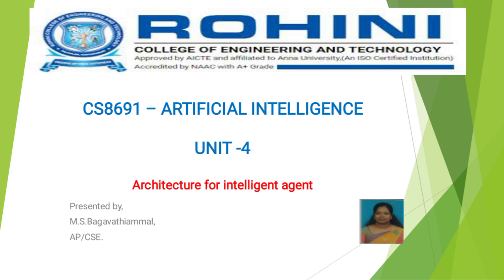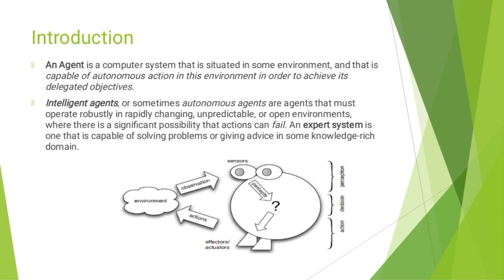In Unit 4, our topic is Architecture for Intelligent Agent. Before going to discuss about Architecture for Intelligent Agent, first we should learn about what is an Agent and what is an Intelligent Agent. An Agent is a computer system that is situated in some environment and that is capable of autonomous action in this environment in order to achieve its dedicated objectives.